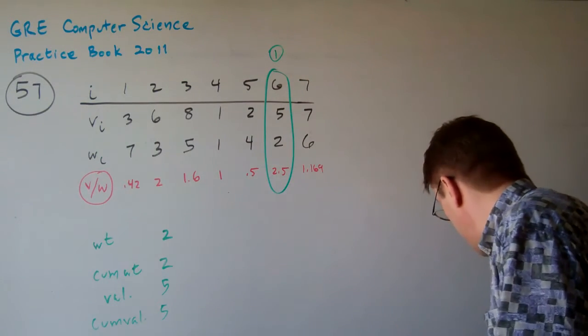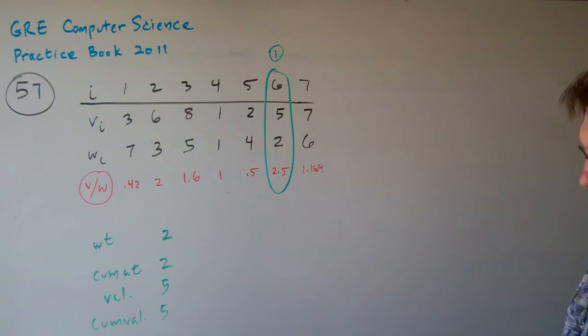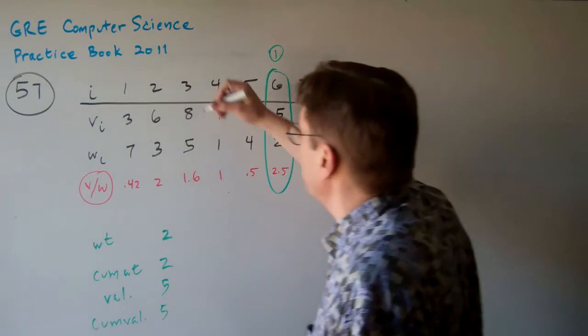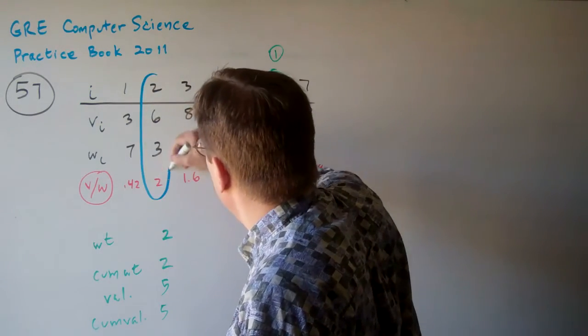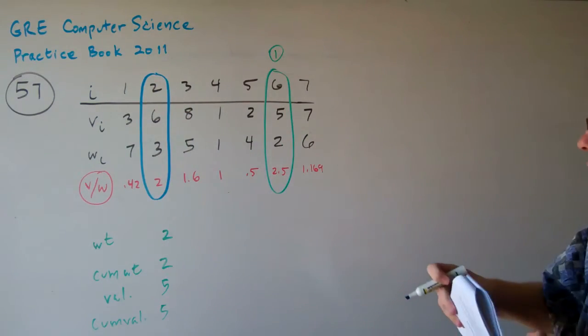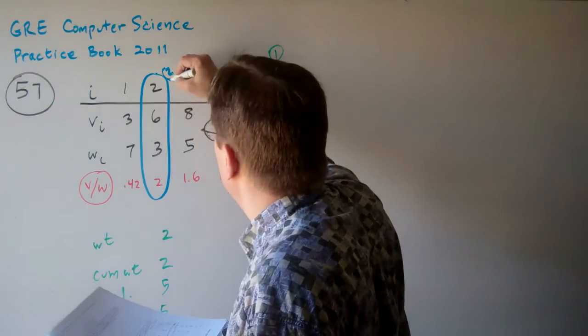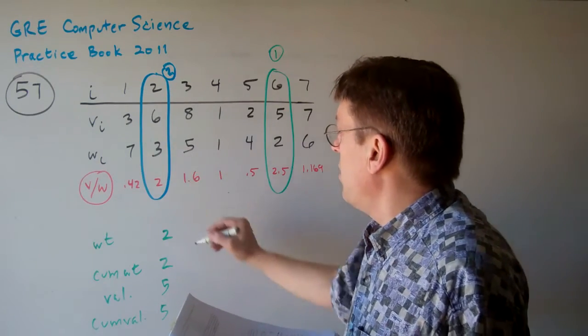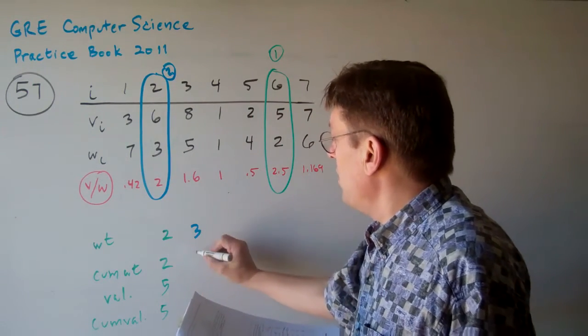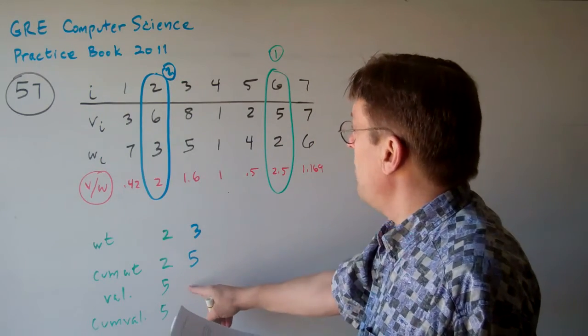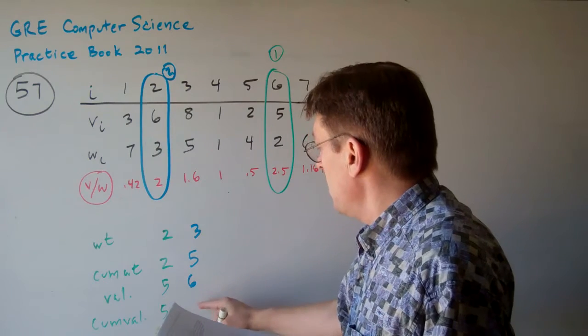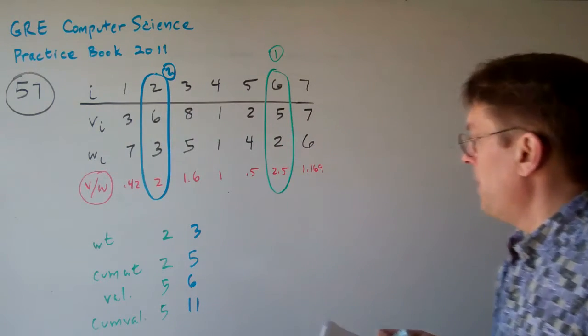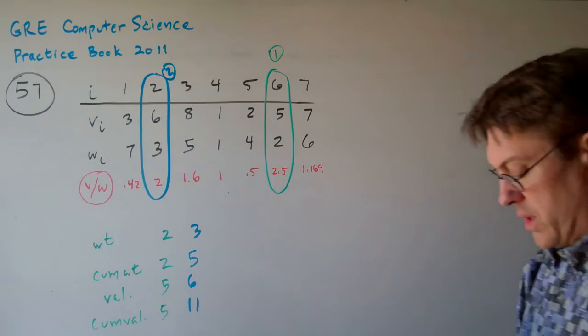Now what's going to happen in step 2? Step 2 is going to take the next highest item and that should be item 2. Item 2 has a weight ratio of 2. So what's going to happen there is the weight is going to be 3. So the cumulative weight's now 2 plus 3 are 5. And then the value is 6. So the cumulative value now is 11. I hope you can see how that's working there.